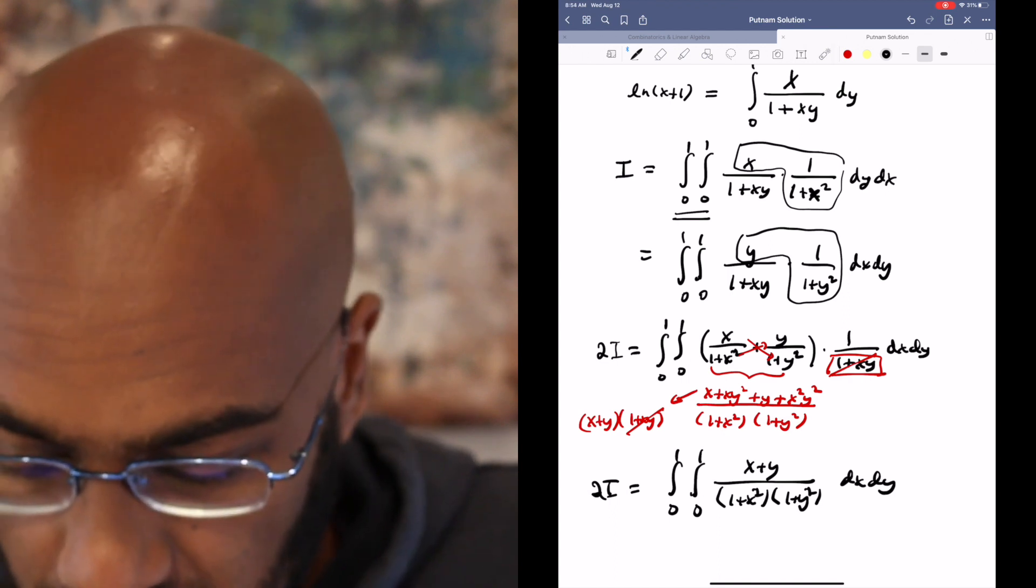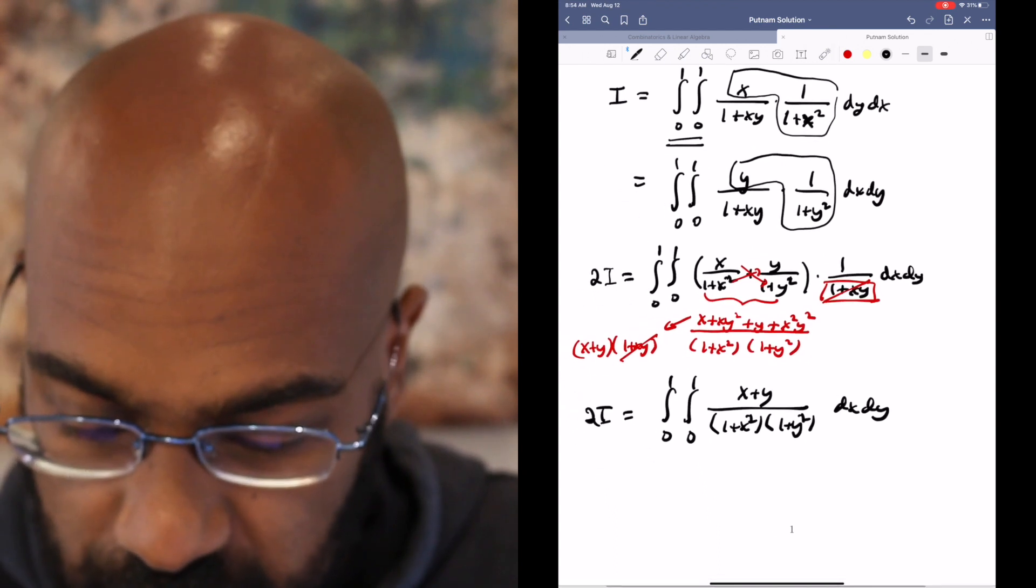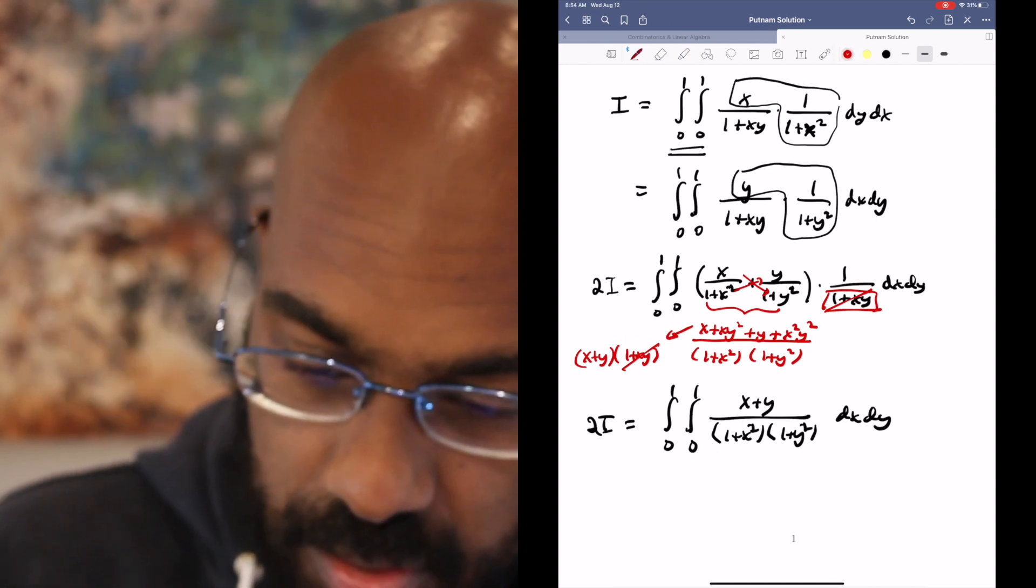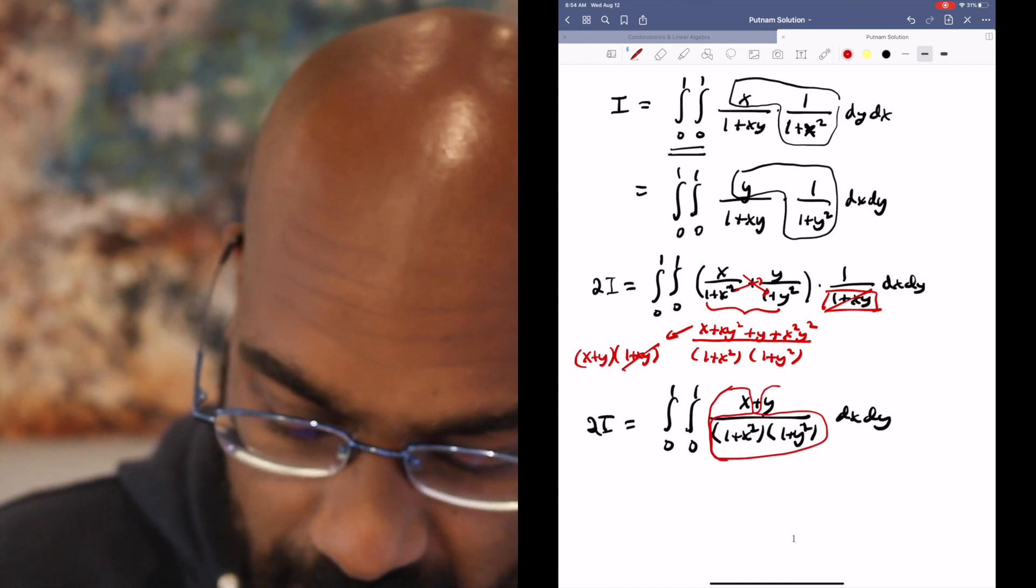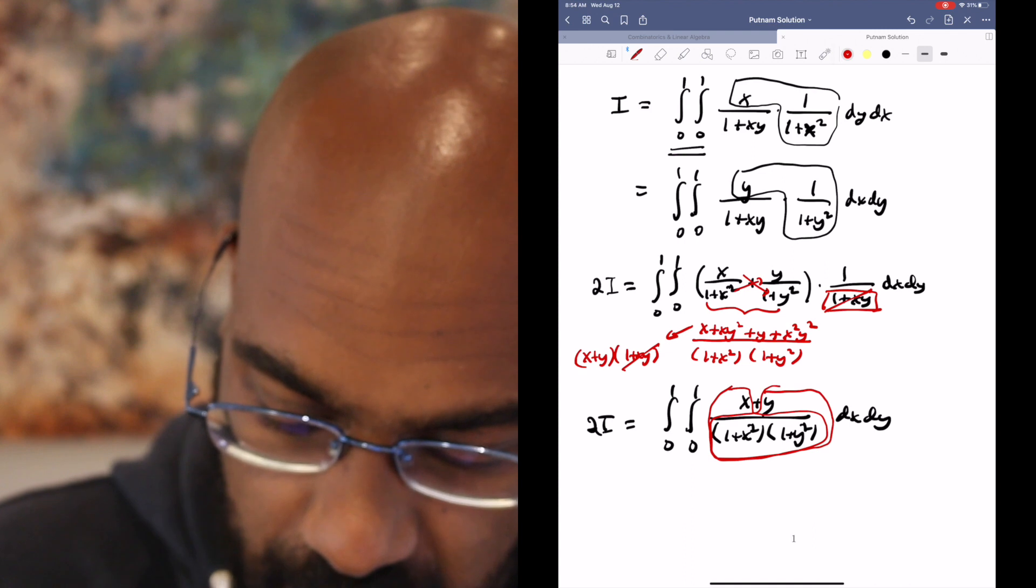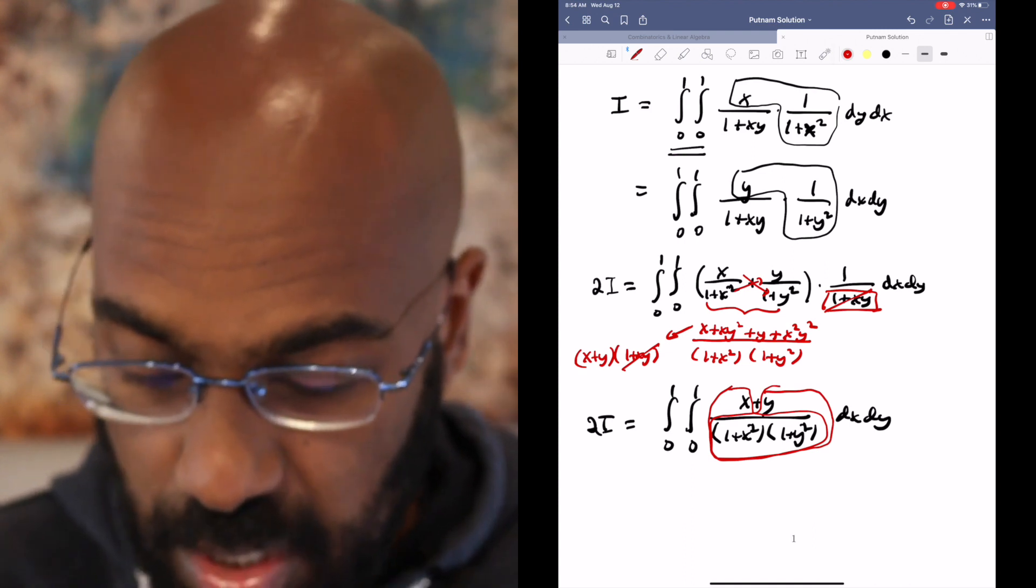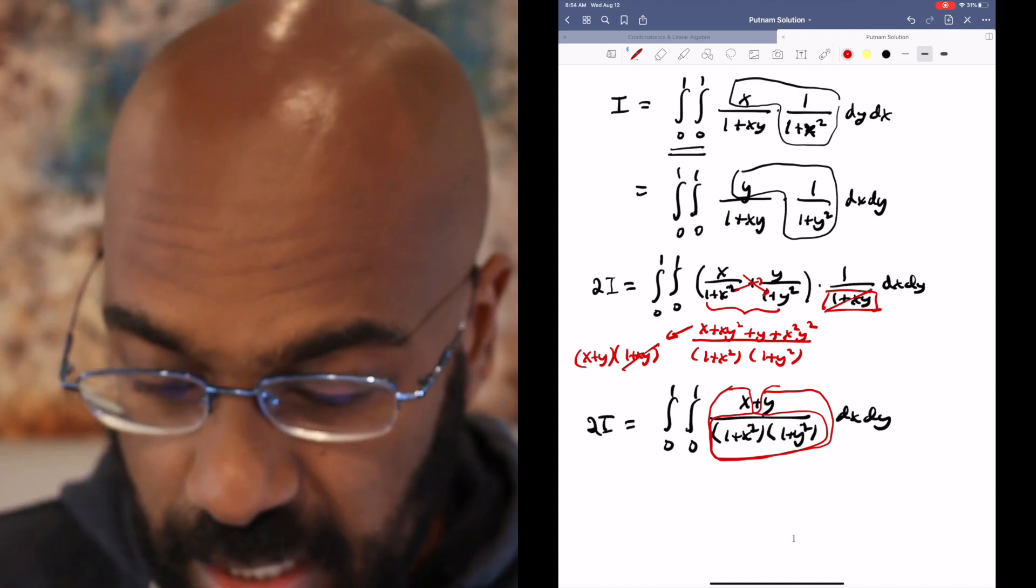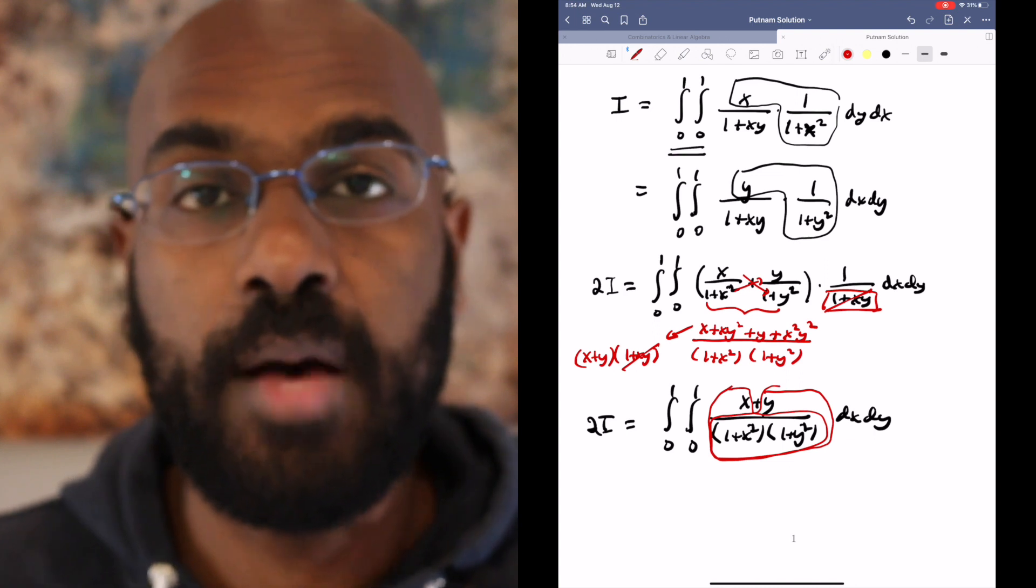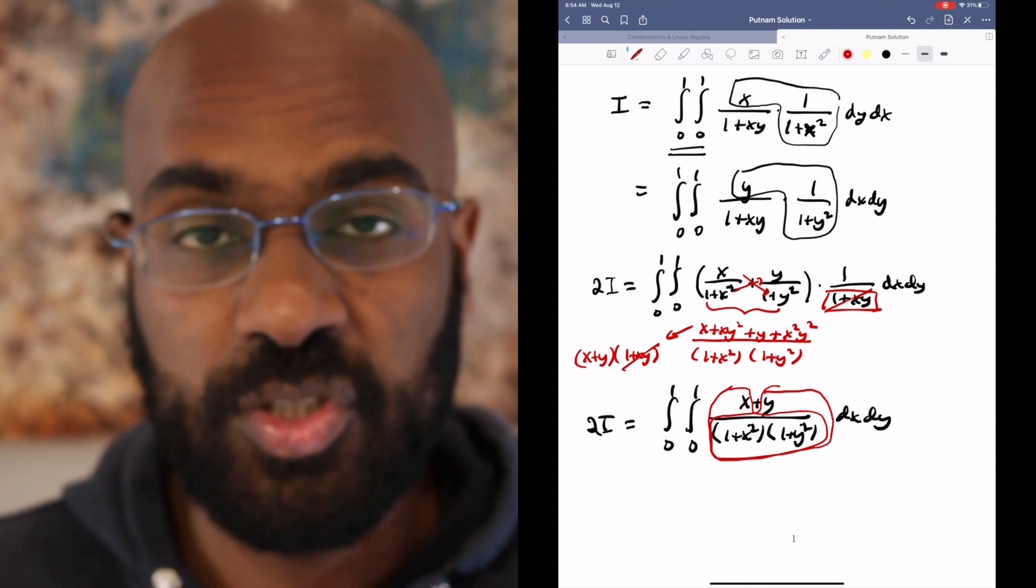There's something really interesting about this integral in particular and the way it's written. There's two pieces here: this x over this quantity and this y over this quantity. If we separated this double integral into the sum of these two red blocks, they'd actually be the same value because we have symmetry in the denominator with x and y, and x and y themselves are ranging over the same square.